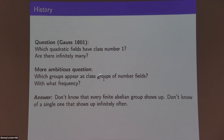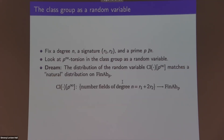We can ask even more ambitious questions — since the class group is a finite abelian group, we can ask with what frequency any finite abelian group appears as a class group of a number field, or whether every finite abelian group appears. This is very mysterious — we don't know that every finite abelian group shows up as a class group of some number field, and in fact we don't know of one that shows up infinitely often. People have started making progress by thinking of the class group as a random object or random variable.